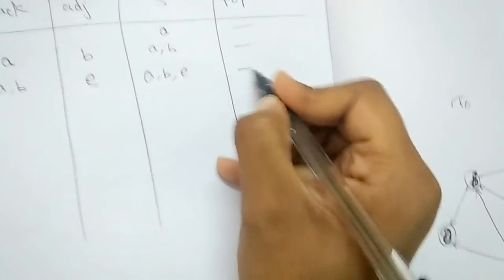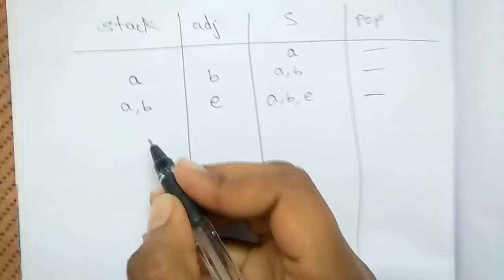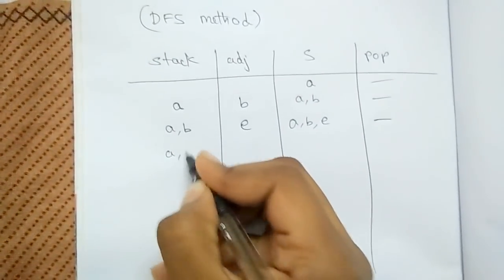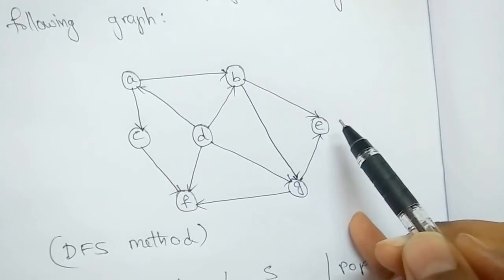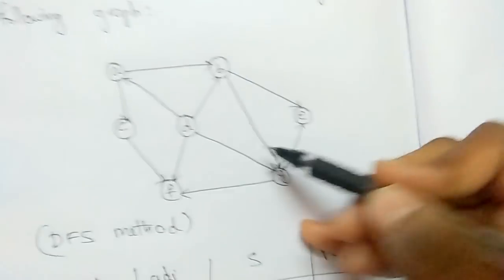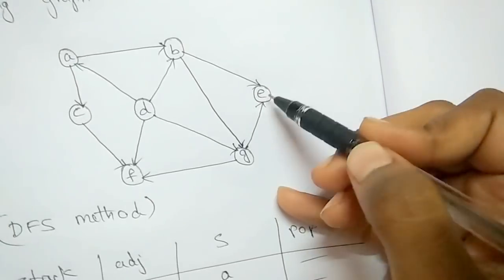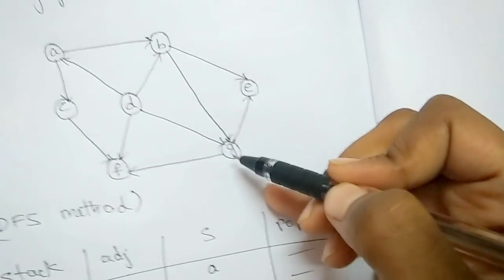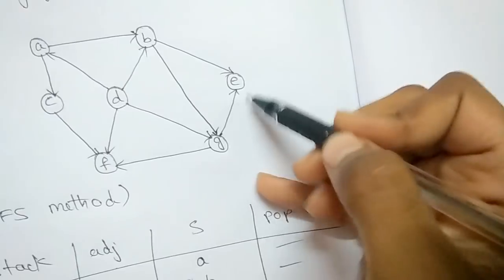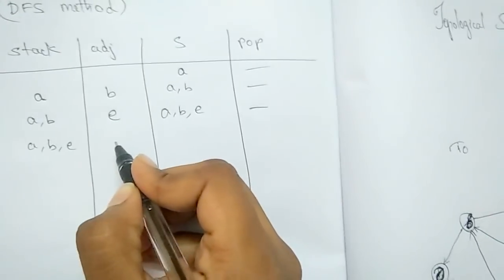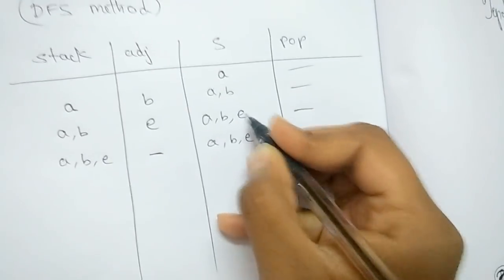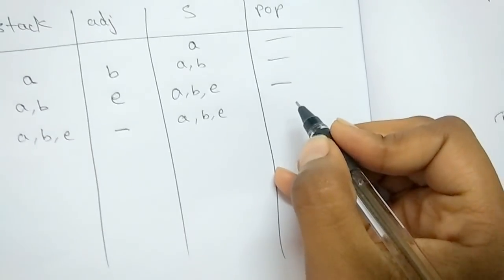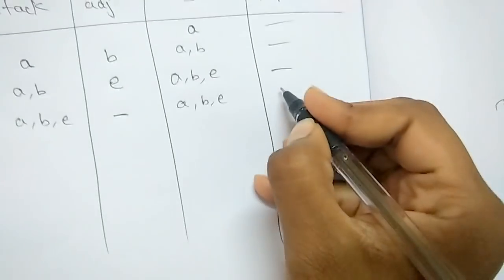Popping out nothing again since that situation hasn't occurred. Stack remains A, B, E. Now checking adjacent to E: the edge coming towards E means G is not adjacent to E, so there is nothing adjacent to E. Since nothing is adjacent to E, I'm going to pop out E.